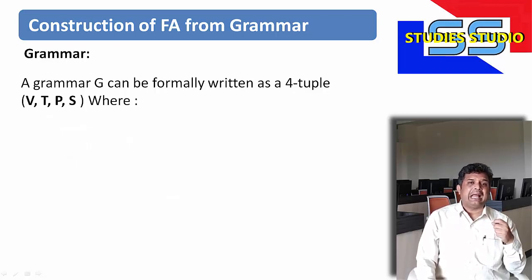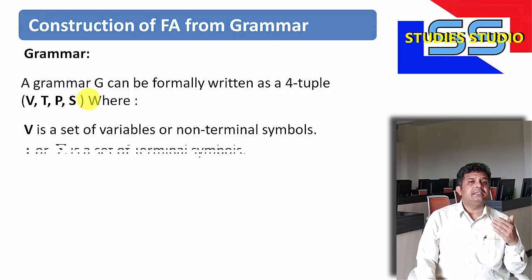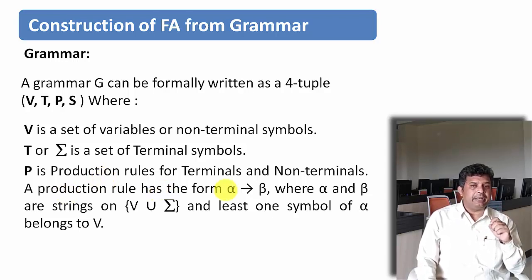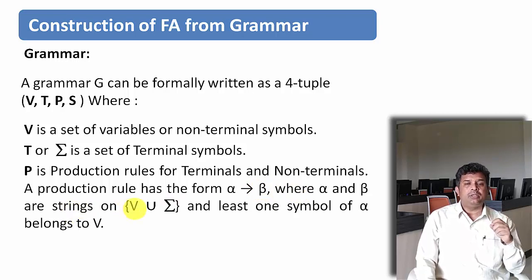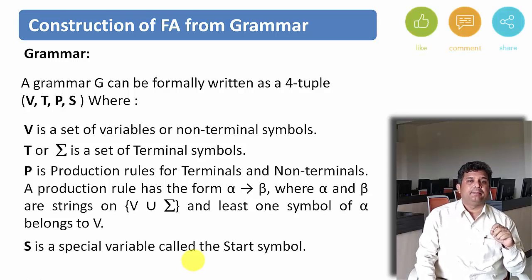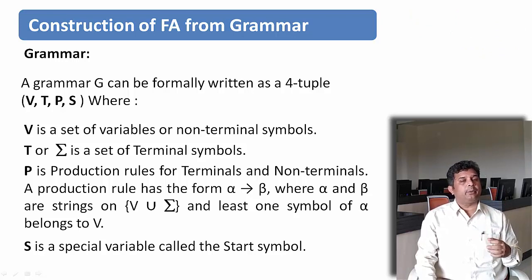Similarly, we define a grammar with this four-tuple: V, T, P and S. Where V is the set of non-terminal symbols, T is the set of terminal symbols or input symbols. P is the production rule for terminals and non-terminals. A production rule has the form alpha derives beta, where alpha is a string on V union Sigma, and at least one symbol of alpha belongs to V. And S is a special symbol called the start symbol. These are the basic things we must know before constructing finite automata from a grammar.